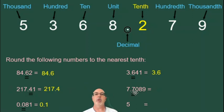Here we have 7.7089. This second seven is in the tenth position, and the number after it is a zero, which is less than five, so we round down. 7.7 is our answer.